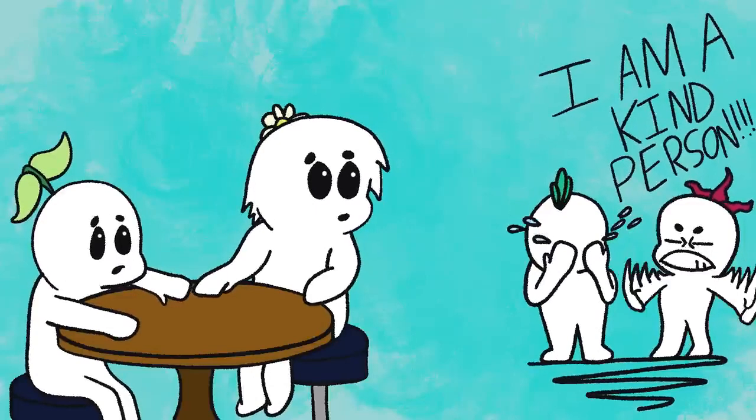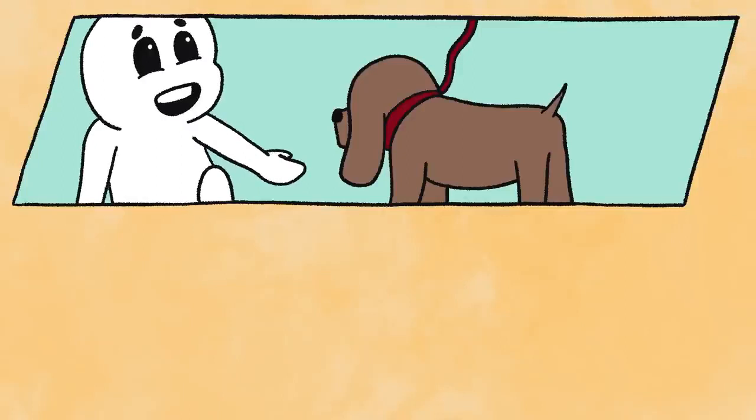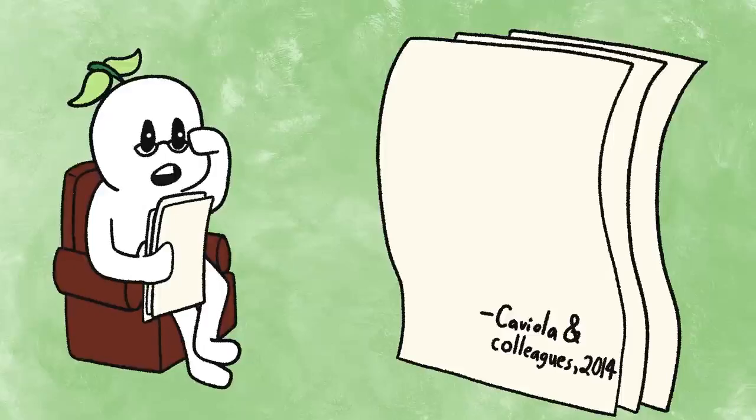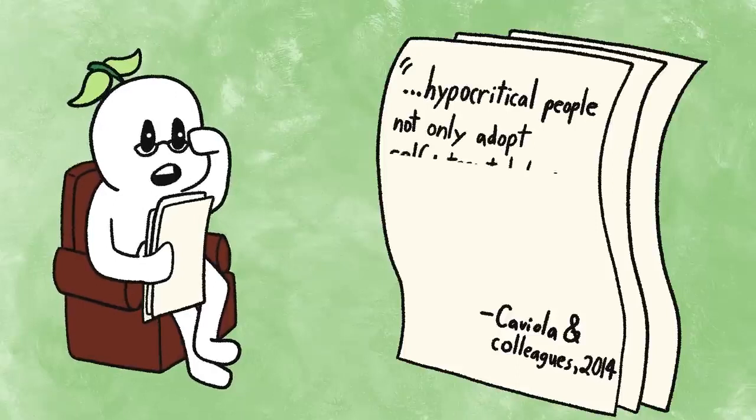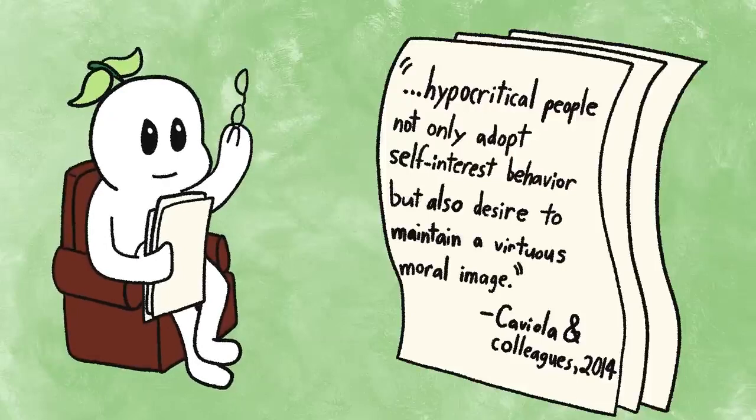It's not consistently being who they say they are. They would never kick a puppy, but you know how poorly they treat their own pets. In a 2014 study by Caviola and colleagues, it was concluded that hypocritical people not only adopt self-interest behavior, but also desire to maintain a virtuous moral image. They'd rather look good than actually be good.